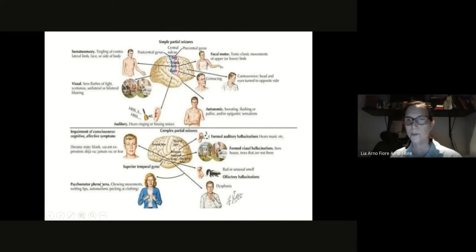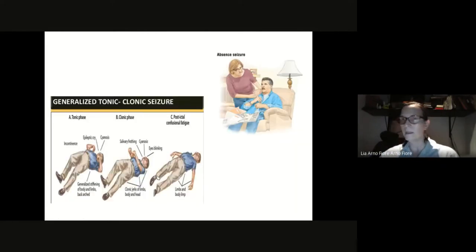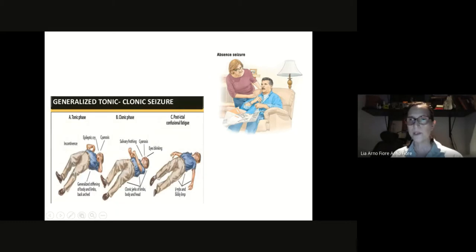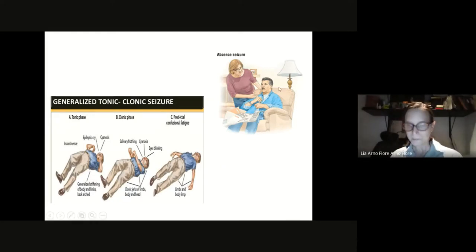These are what we now call focal seizures without impairment. When the patient evolves to impaired consciousness, you can have psychomotor phenomena like chewing movements and automatisms — the patient isn't aware of what's going on. These are the complex partial seizures, now called focal seizures with impaired awareness. Then of course we have generalized seizures. The classic tonic-clonic: there's a tonic phase where the body stiffens and the patient stops breathing, then clonic repeated movements, and then post-ictal the patient is completely out.